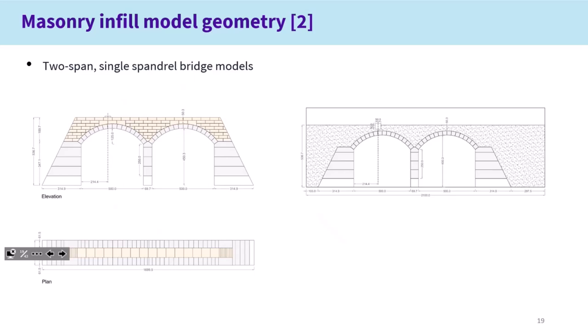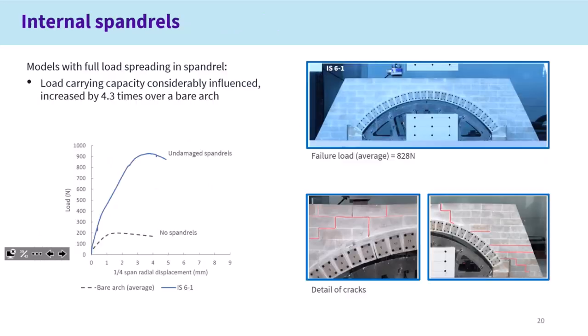Final question: were the units used in the experiments hollow or solid? For the plane strain models, they're all solid and just full length into the model. For the 3D models, we have individual blocks across the span — the brick units are solid, not hollow.